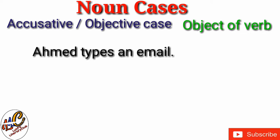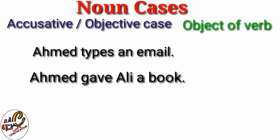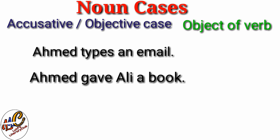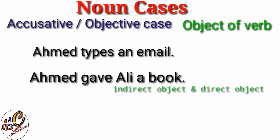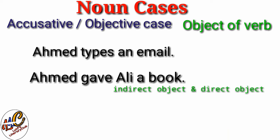So in this sentence, email is the objective case of the noun. Let's look at another sentence: Ahmad gave Ali a book. In this sentence, 'gave' is the past form of verb 'give,' so it is a verb. Ahmad is the subject while Ali and book are objects of the verb give. There are two types of objects: direct object and indirect object. Living things are indirect objects and non-living things are direct objects. Ali is indirect object and book is direct object.